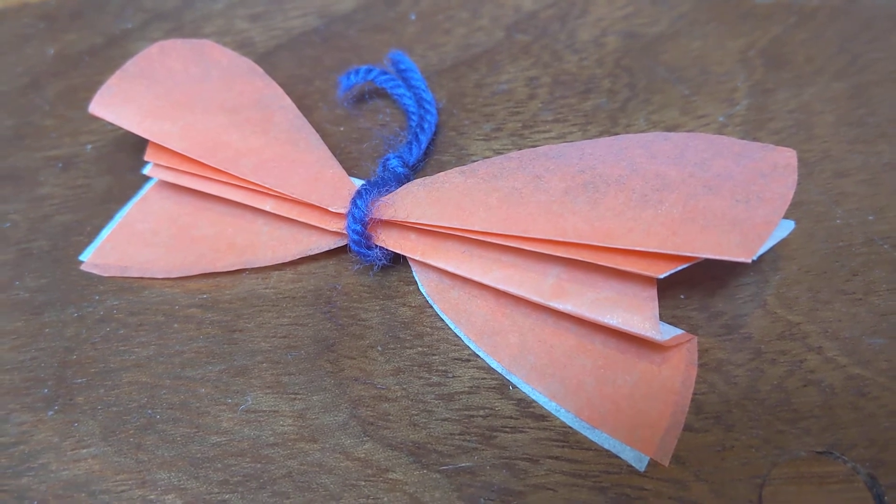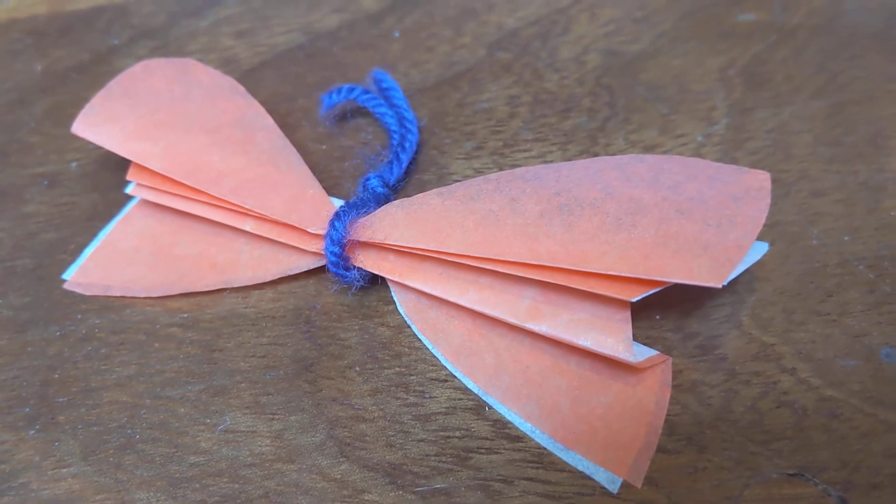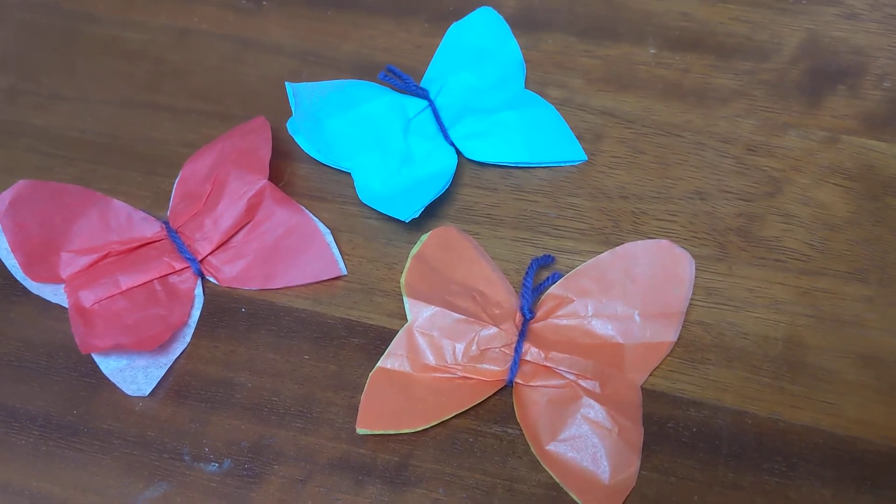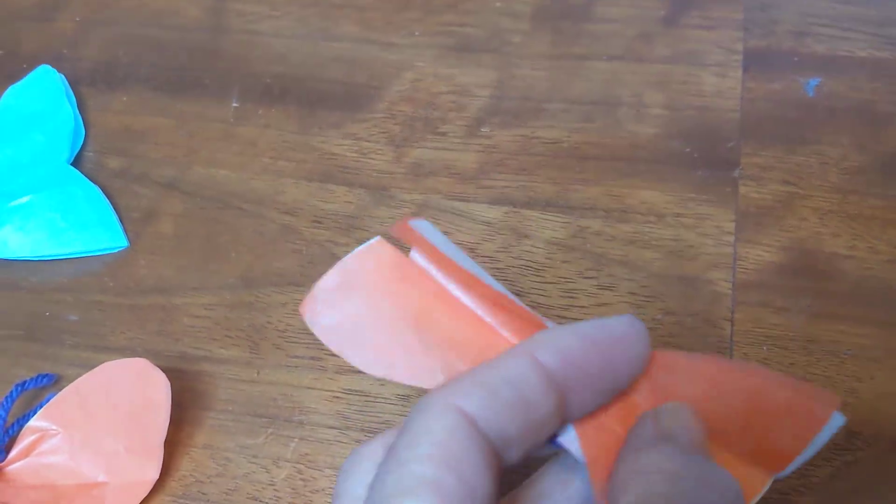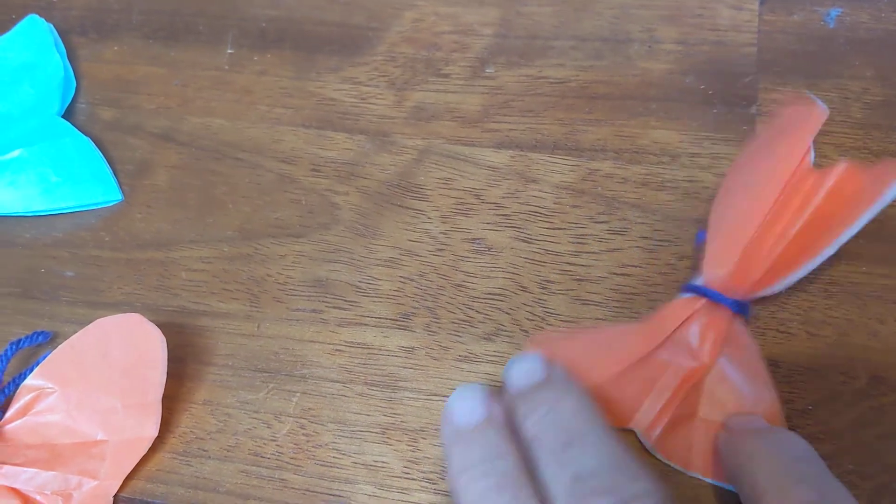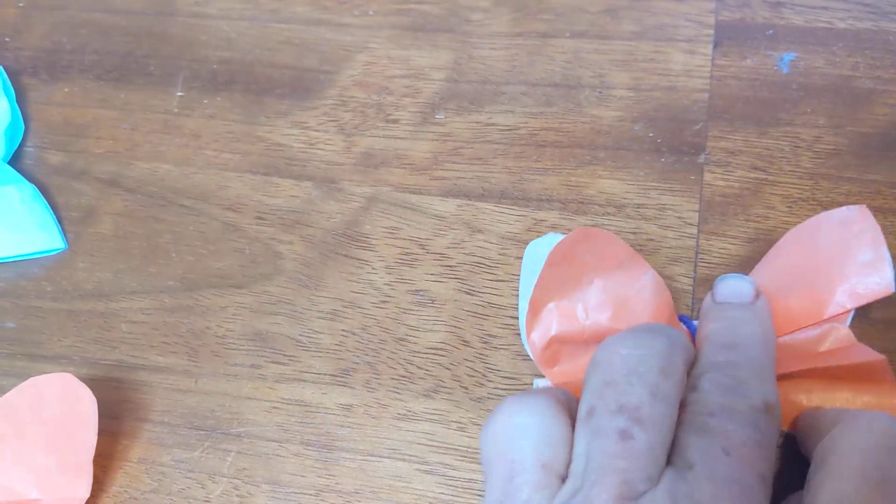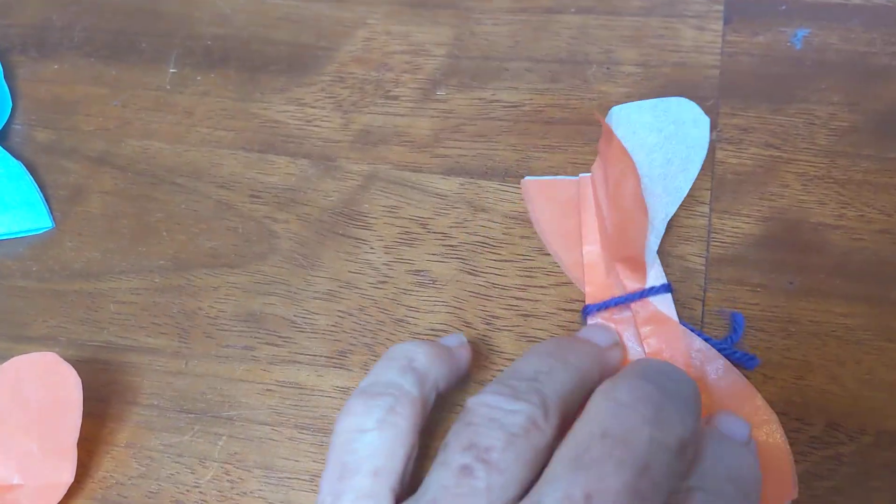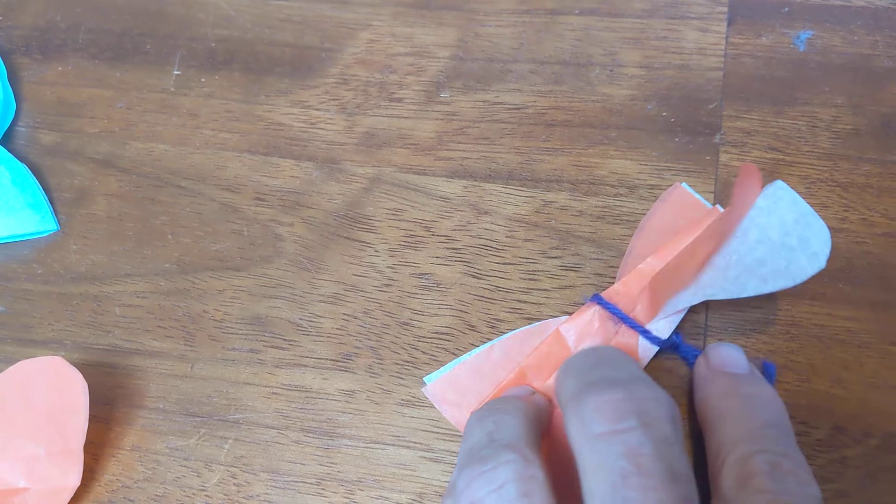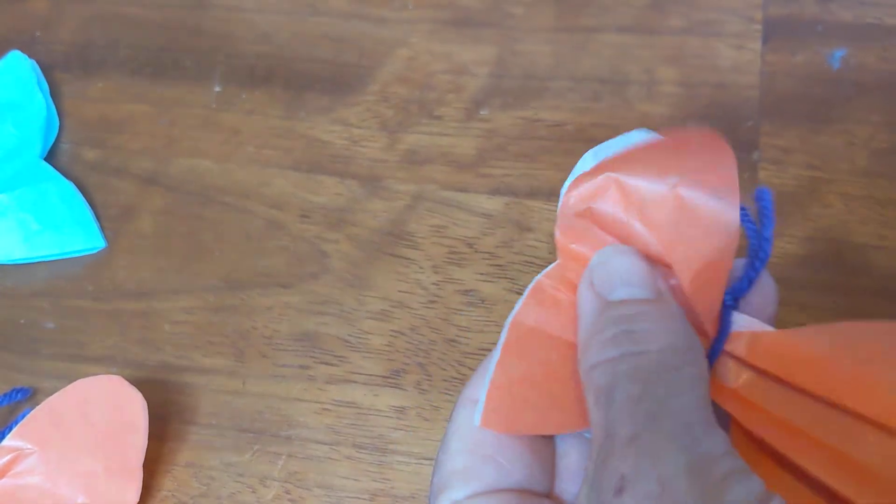Then you're going to spread out the fan of the folds to make your different butterflies. It's very easy. You just pull very carefully and spread out the butterfly wings. Hard to do with one hand. And then the antenna at the top. Spread them out nicely and gently.